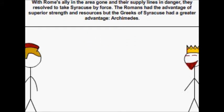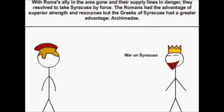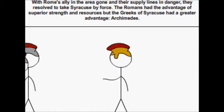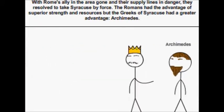With Rome's ally in the area gone, and their supply lines in danger, they resolved to take Syracuse by force. The Romans had the advantage of superior strength and resources, but the Greeks of Syracuse had a greater advantage: Archimedes.